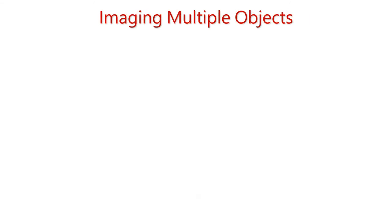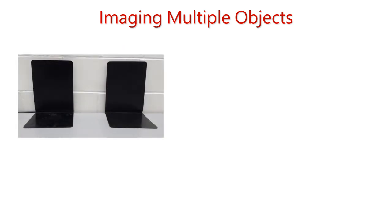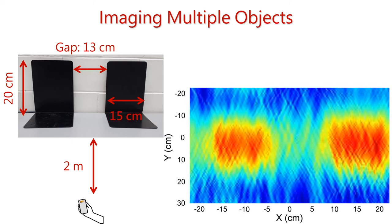We also tested our systems to image multiple objects. For example, this shows two metal objects placed at about two meters away from the imaging system with different length and breadth placed with a gap of about 13 centimeters. The millimeter wave imaging shows that we can not only discriminate the two objects and estimate their dimension but also estimate the gap in between accurately.